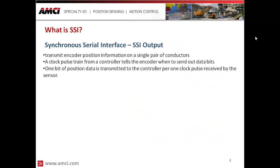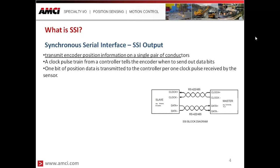So what is SSI? SSI is an acronym that stands for Synchronous Serial Interface. With a Synchronous Serial Interface, we transmit encoder position on a single pair of conductors. There's a pair of conductors called the clock signal, which is controlled by the master. That master sends a pulse to the slave device — in this case, a position sensor — and then that slave device sends back a data bit relative to its position to the master.